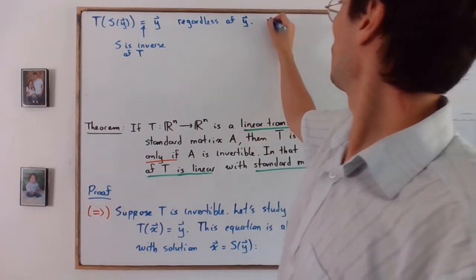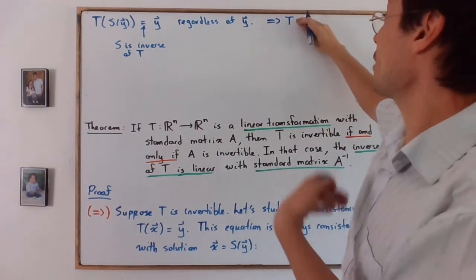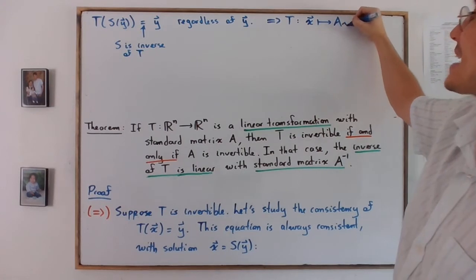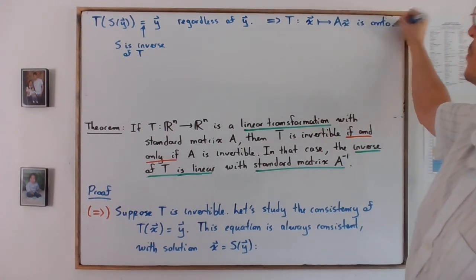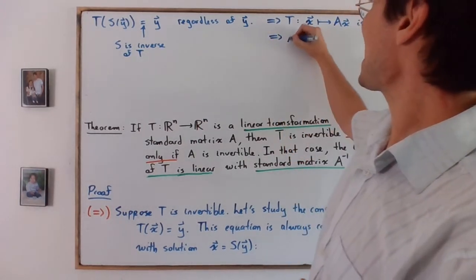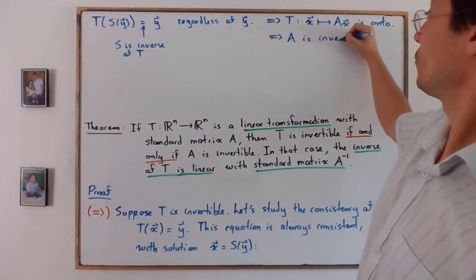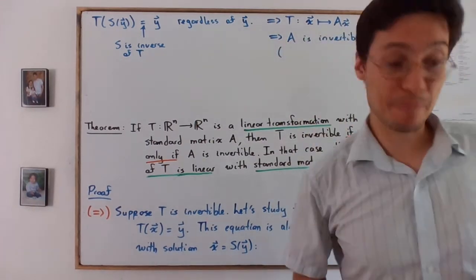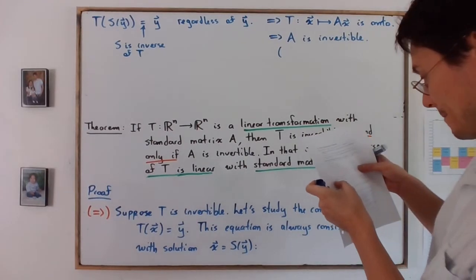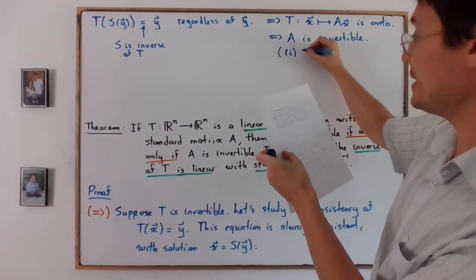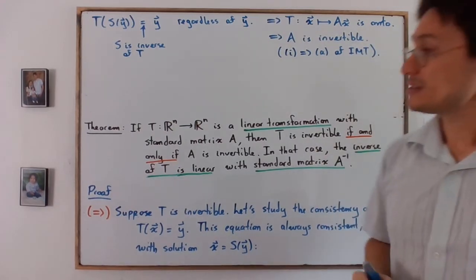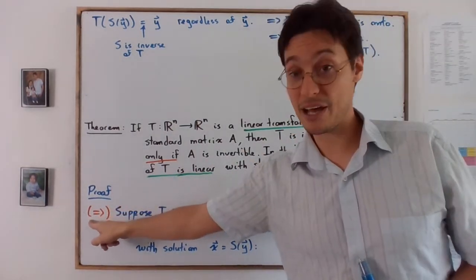T is onto. And of course, now we know that T has a standard matrix, so T is onto. As a result, it means that A is invertible. We are using here a part of the invertible matrix theorem: part I implies A of IMT. So this proves the arrow in this direction.